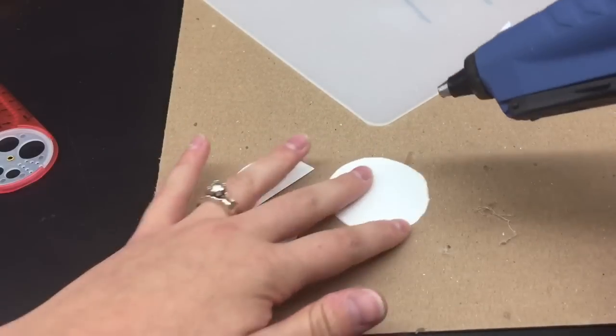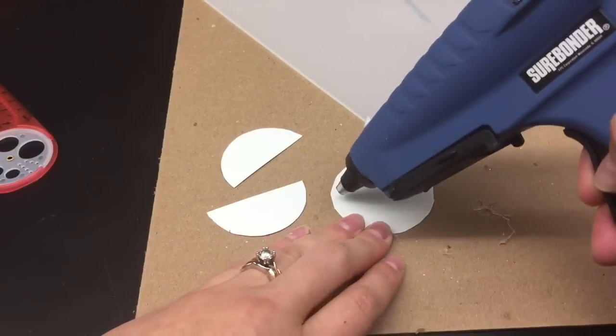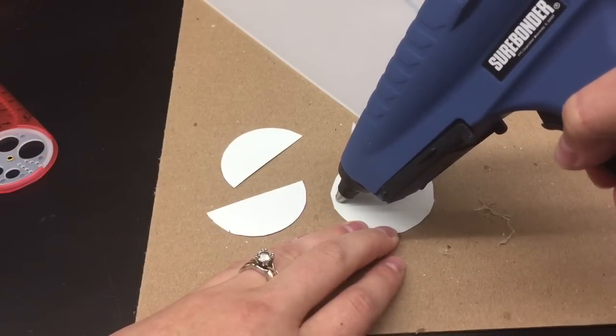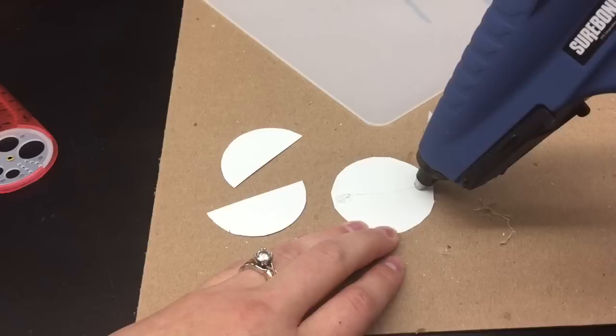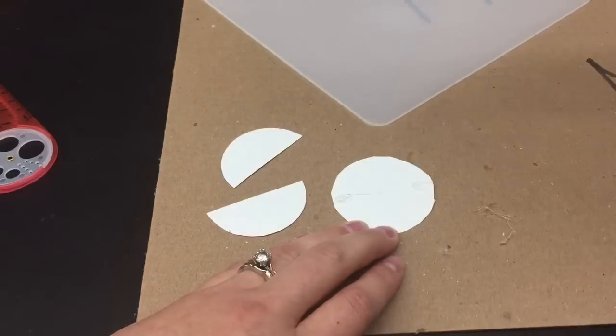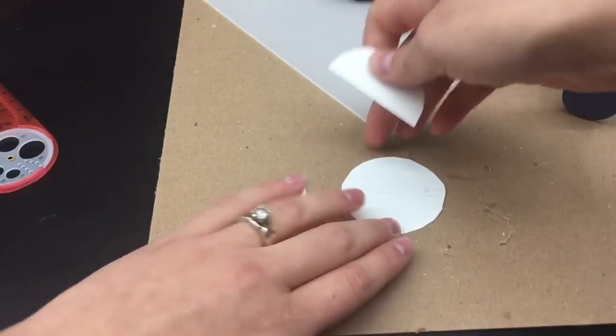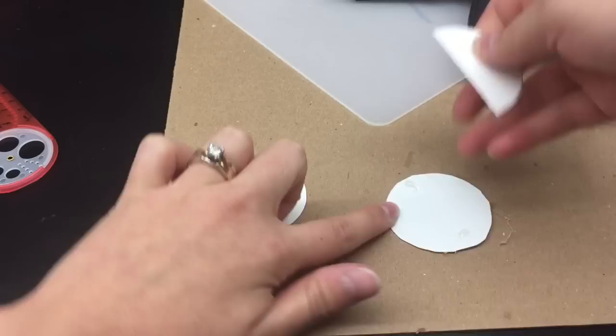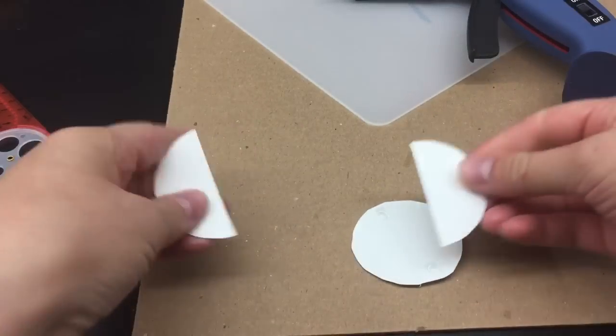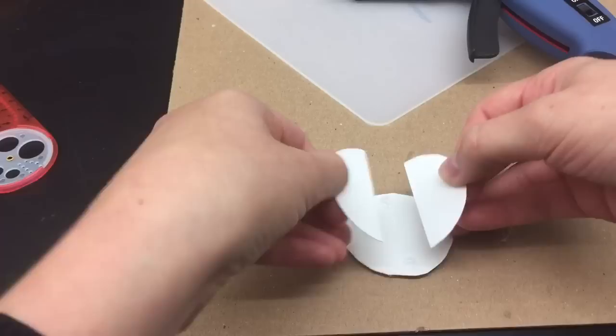Now for gluing this together, you are going to put two dots of glue on both ends. That's all you need, two tiny little dots. Remember to push down on your hot glue gun to get rid of that string.